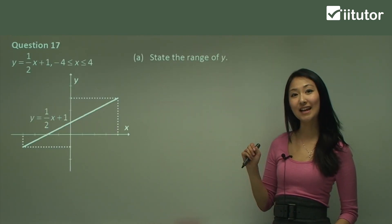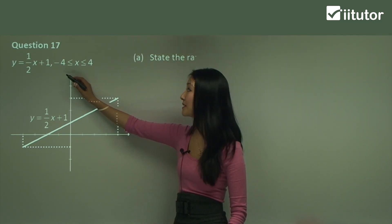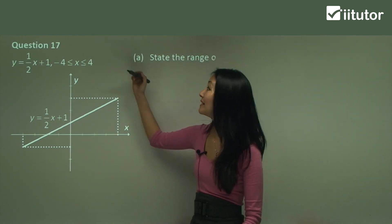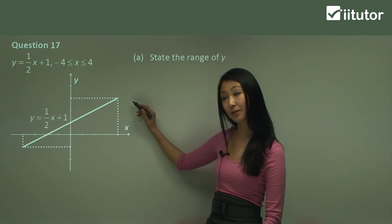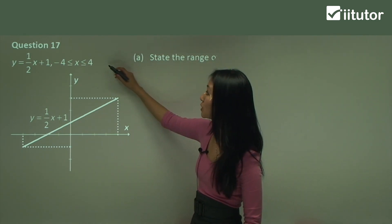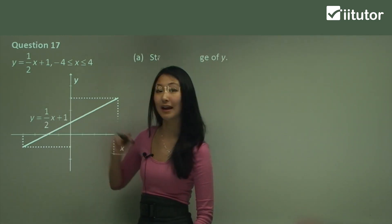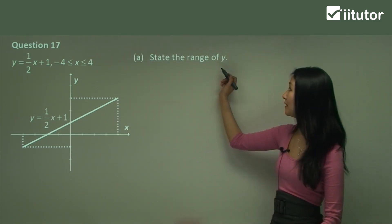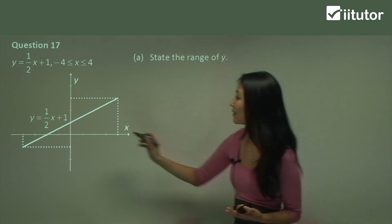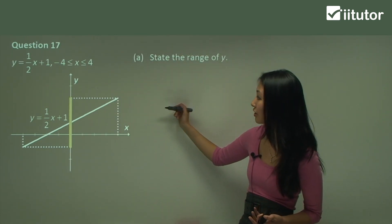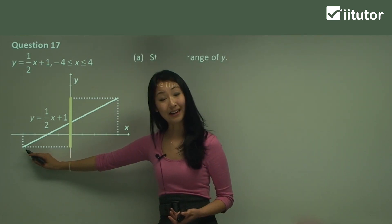Now in question 17, what we've been given here is a function, but only limited to a specific domain. So we have y equals half x plus 1, which we've graphed on this graph over here, but only between 4 and negative 4. So we're only going from 4 to negative 4. So let's state the range of the original function. How are we going to do that? Well, you can see that it's always increasing. So the range is going to go from when x equals 4 to when x equals negative 4.